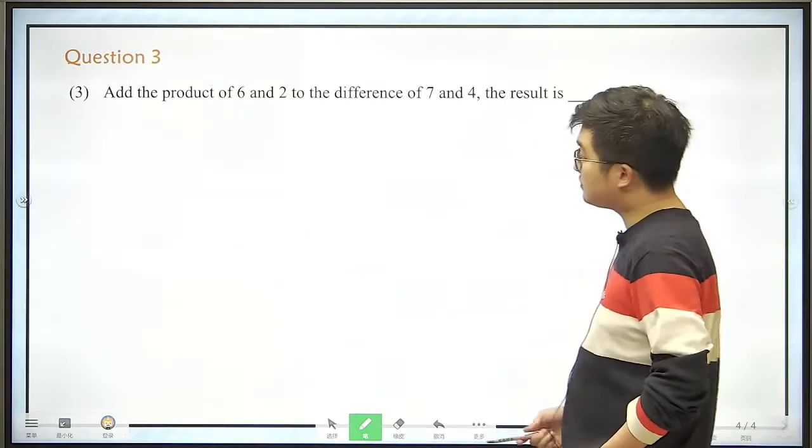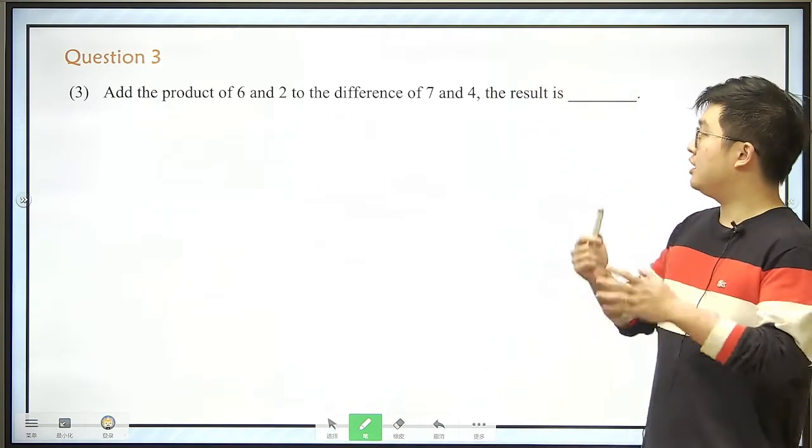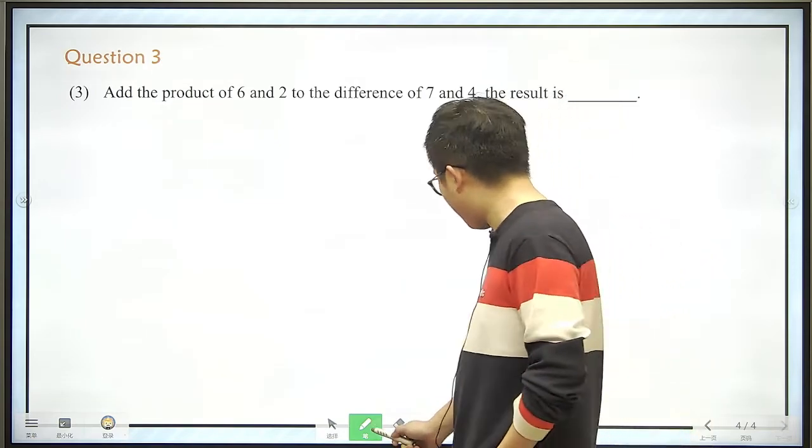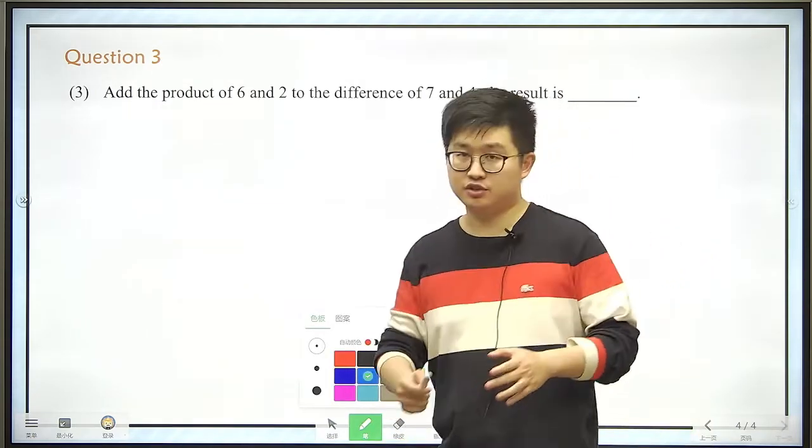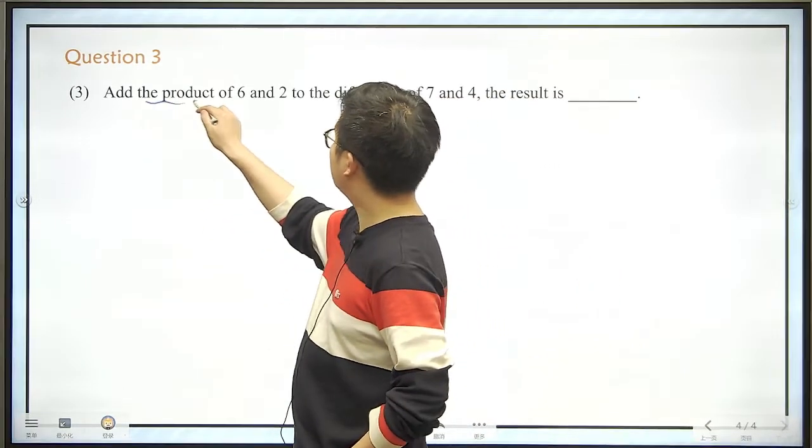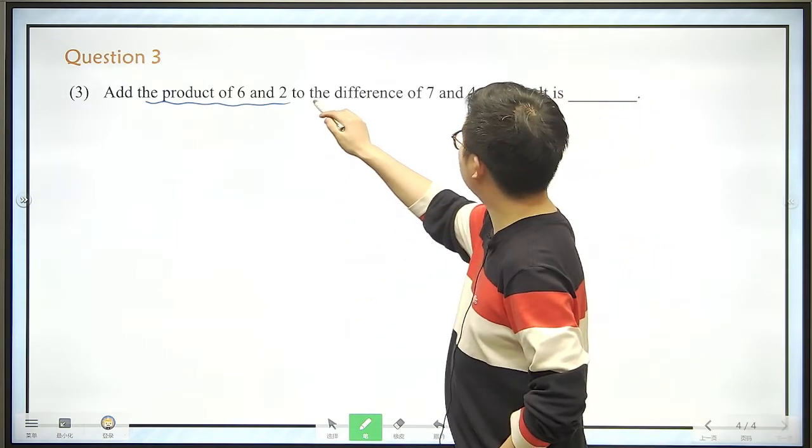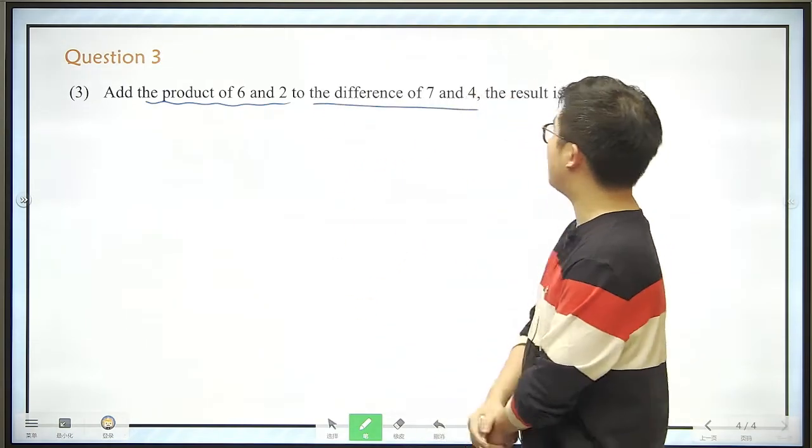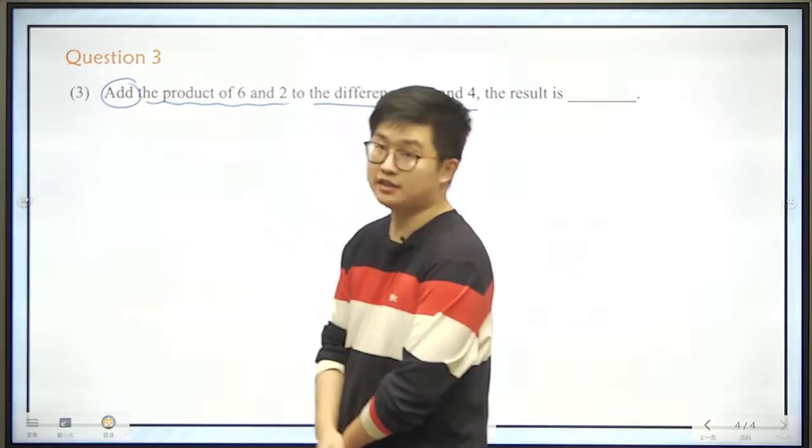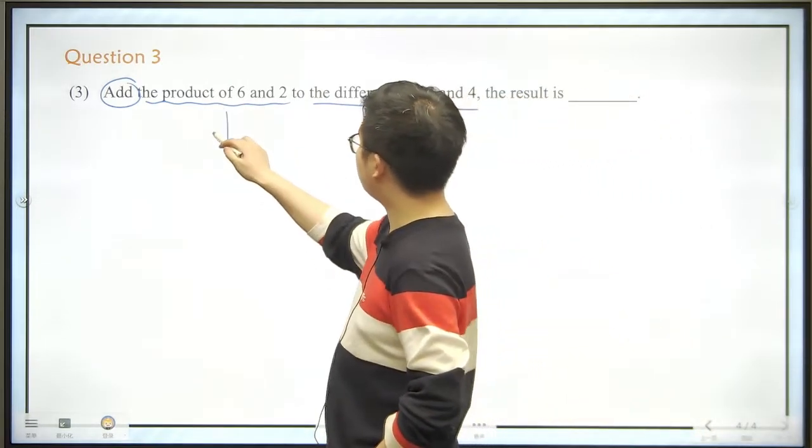And our last question: add the product of 6 and 2 to the difference of 7 and 4. So now we are seeing two descriptions here. The first is the product of 6 and 2. The next one is the difference of 7 and 4. And in the end we need to add them. We need to add them up.